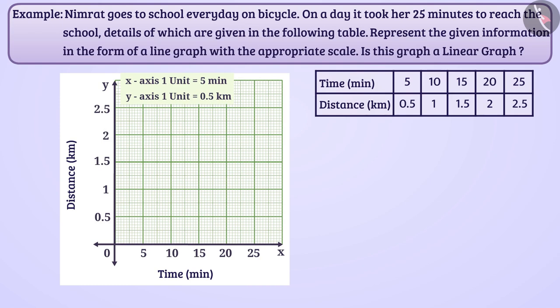We will now plot the points for different situations. A distance of 0.5 km has been covered in 5 minutes. We will mark point P on the coordinates 5, 0.5, which will represent this position on the graph.